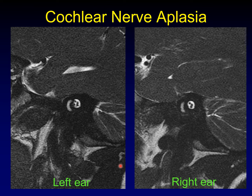Cochlear nerve aplasia is important in children. On this steady-state free precession high-resolution sagittal sequence through the inner ear, you normally see four nerves: the facial nerve, the cochlear nerve, and the superior and inferior vestibular nerves. In this ear, you only see three — the facial and vestibular nerves are present but the cochlear nerve is absent. That's cochlear nerve aplasia, and this is not an ear you want to put a cochlear implant into. This discussion is only relevant in children, as adults do not lose hearing from this particular anomaly.